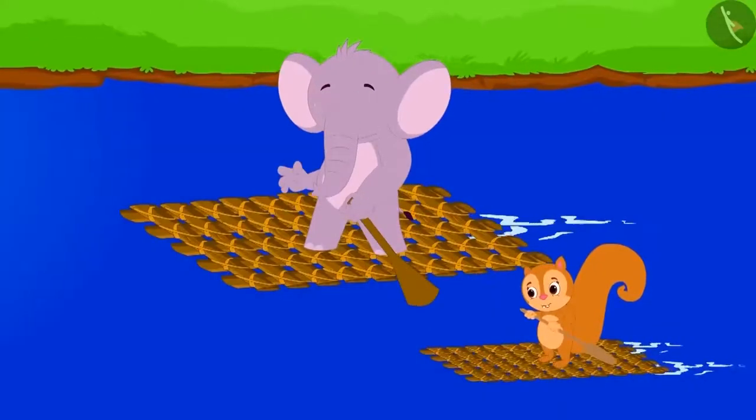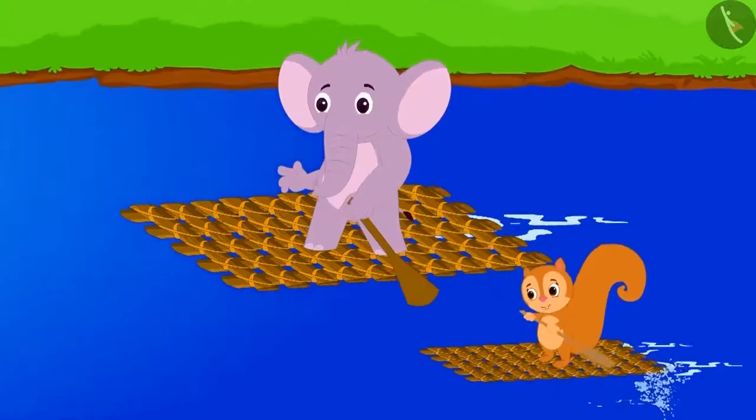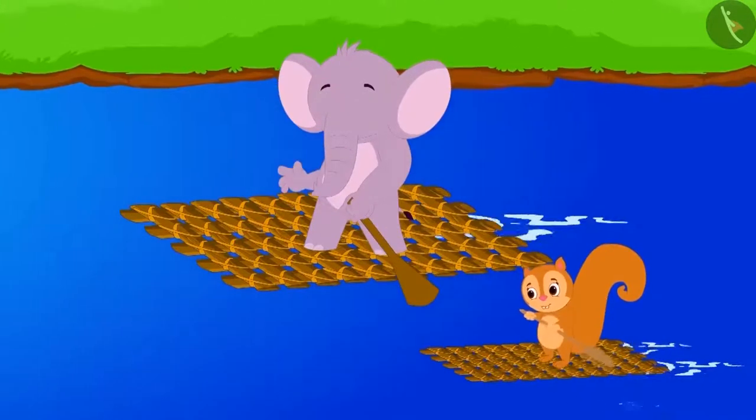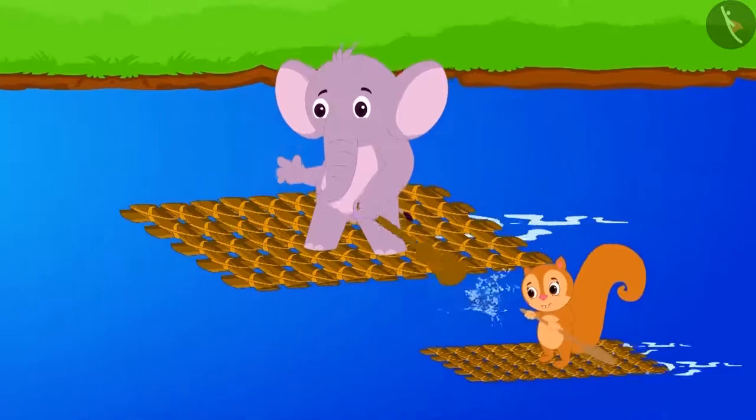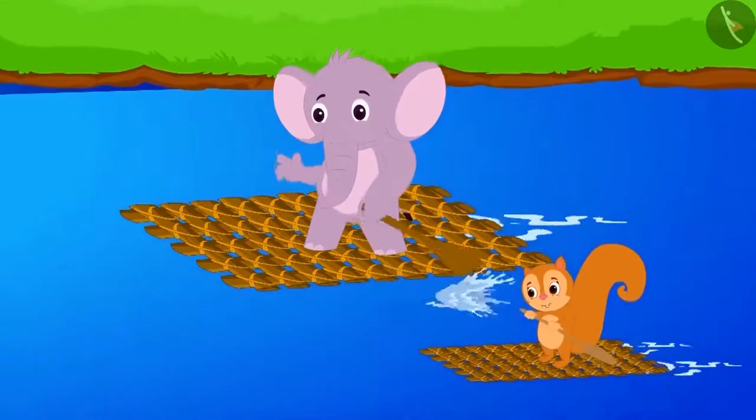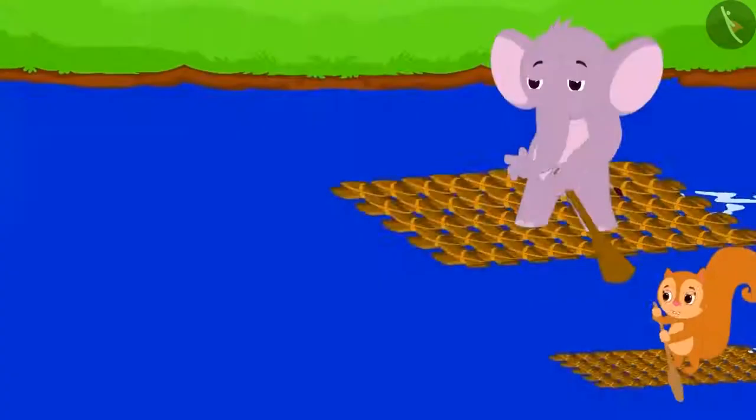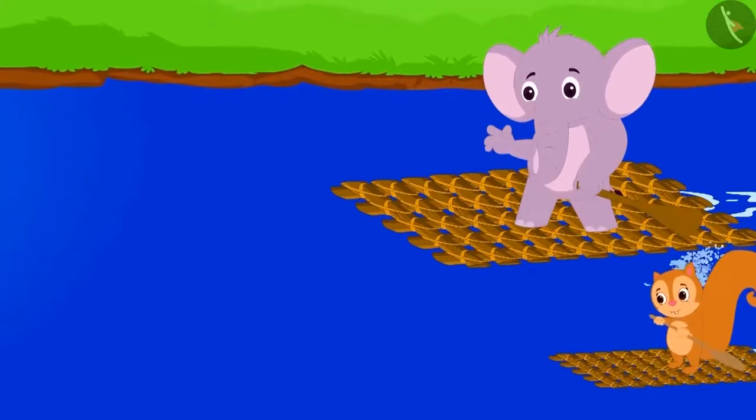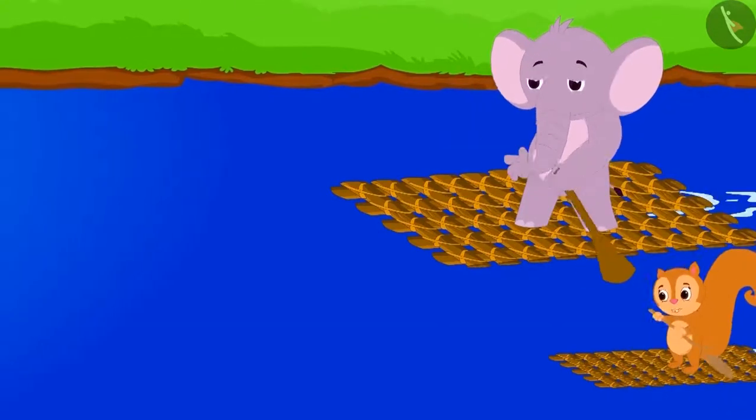Now Chanda and Appu both sailed their boats on the river and started for their homes humming the table of 10. Come children, let's repeat the table of 10 with them.